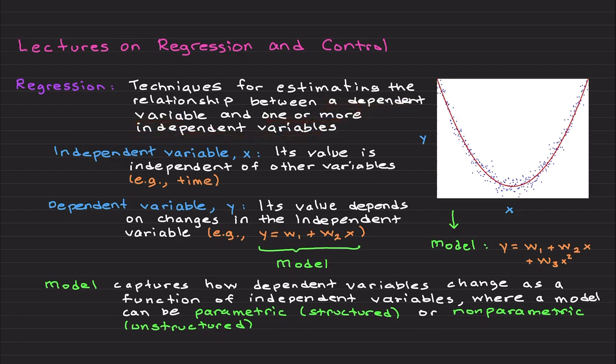Let me define dependent and independent variables. Let me start with the independent variable. So we say a variable x is independent when its value is independent of other variables. For example, you can think of time.